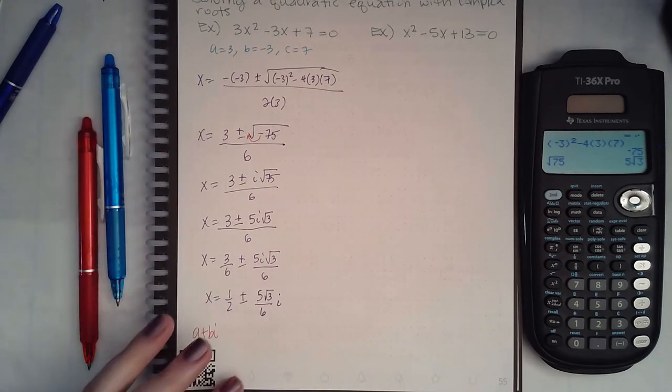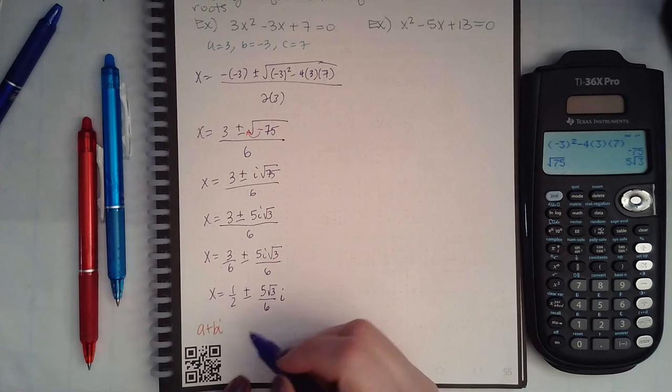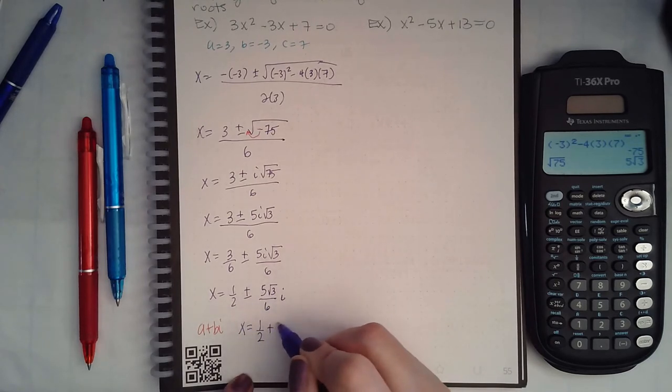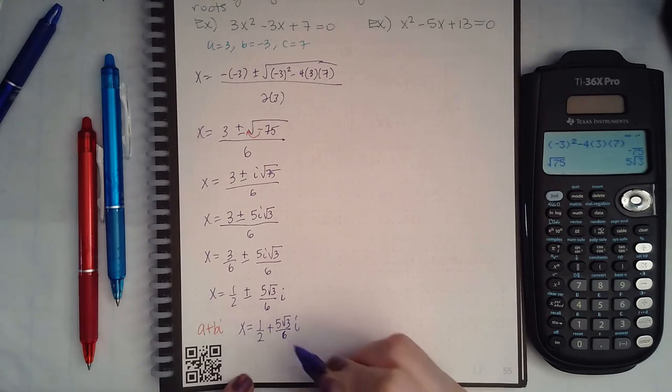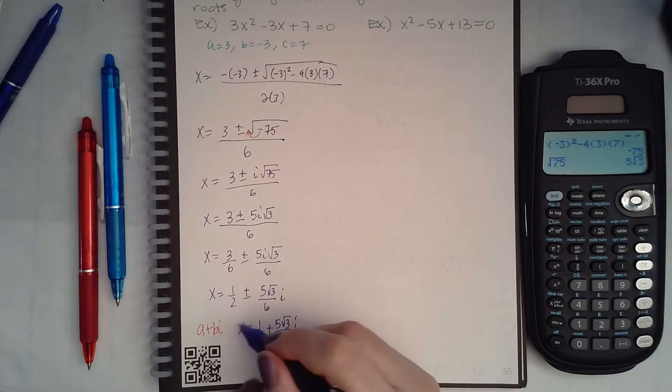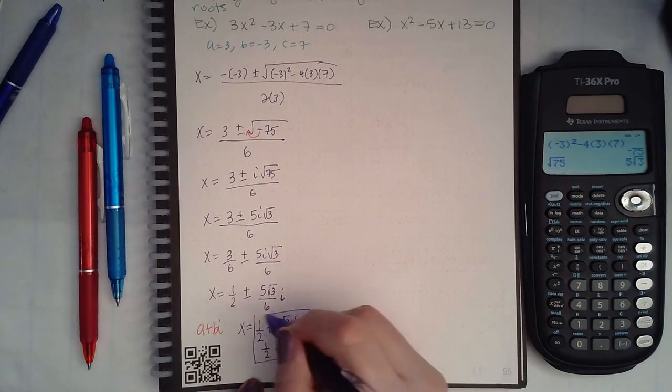If Alex does not have the plus or minus button, you do have to separate this into its two expressions, so you would have this as one expression and then you would have this other one as the second expression, and both are your answers.